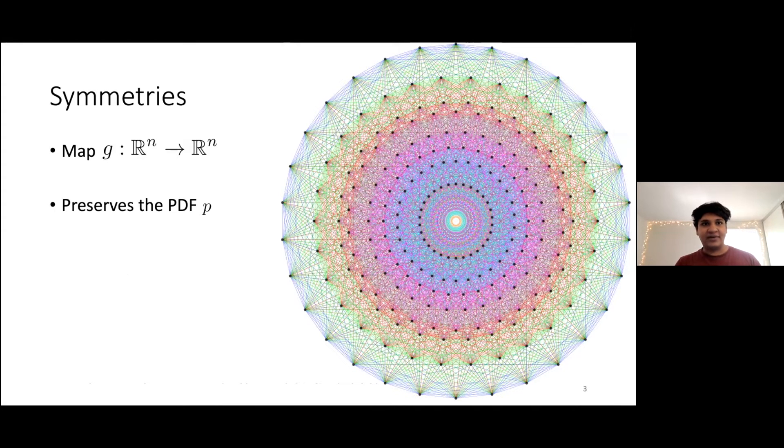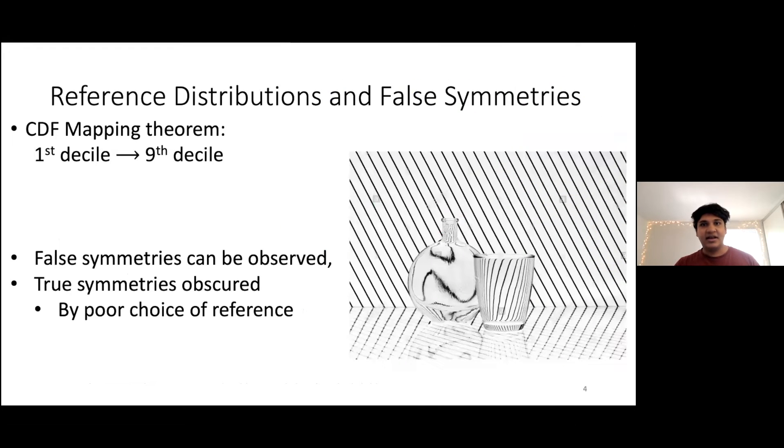A symmetry is any map G from R^n to R^n, which preserves the probability density function. However, this definition of symmetry, while it might seem a bit obvious at first, is not perfectly clear, in the sense that through the CDF mapping theorem, we can invert various kinds of distributions. For example, we can map the first decile to the ninth decile, second decile to the eighth decile, and so on, and create a false symmetry of a Z2 variety, for example, and we can create all kinds of false symmetries.